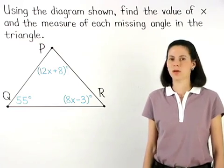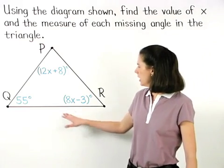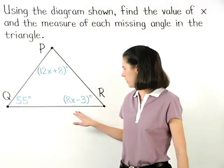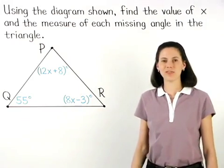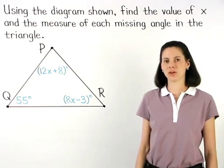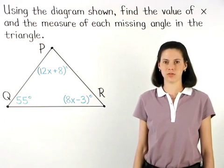In this problem, we're given a triangle and information about each of its angles. We're asked to find the value of x and the measure of each missing angle in the triangle.